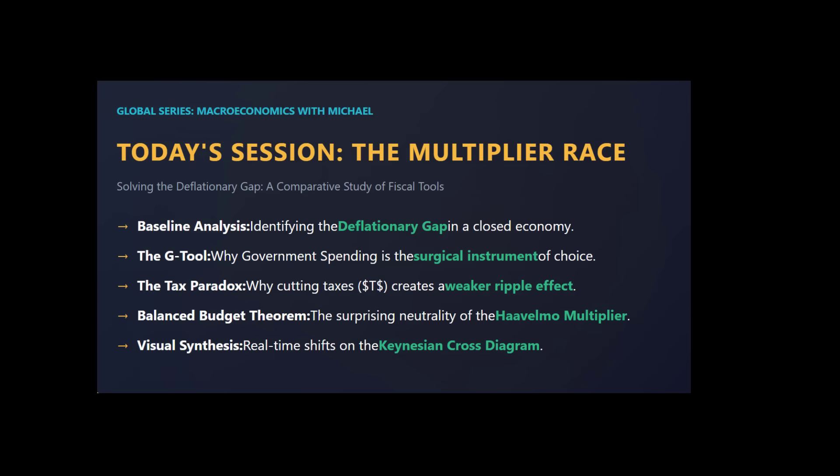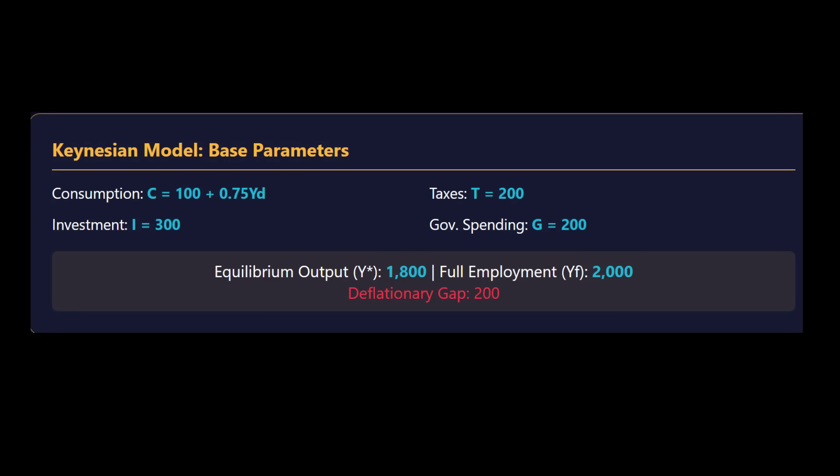With all those numbers in place, you plug everything into the aggregate demand equation and solve for equilibrium. The economy's current output — its Y-star — is 1800. But the goal, full employment output, is 2000. That's a deflationary gap of 200 units. We don't need a policy that injects the full 200, because the initial injection gets multiplied. With an MPC of 0.75, the spending multiplier is 1 divided by 1 minus 0.75 — so 1 divided by 0.25 — which gives us a multiplier of 4. To get a 200 unit boost, we only need an initial kick of 50, because 50 times 4 is 200.